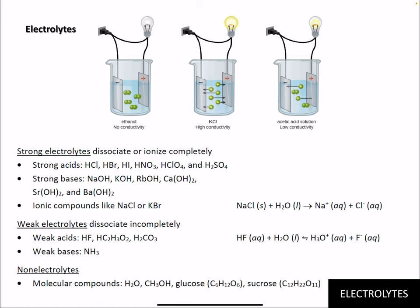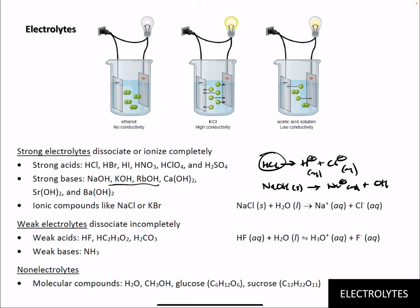Strong electrolytes dissociate or ionize completely. Strong acids like HCl ionize completely — there's no more HCl left in water; it's all H⁺ and Cl⁻ aqueous. Strong bases — look for hydroxides — do the same thing. Sodium hydroxide in water gives sodium ions and hydroxide ions completely; no more solid sodium hydroxide remains. The six strong acids are strong electrolytes, strong bases are strong electrolytes, and other soluble ionic compounds like sodium chloride and potassium bromide are also strong electrolytes because they dissociate completely into ions.